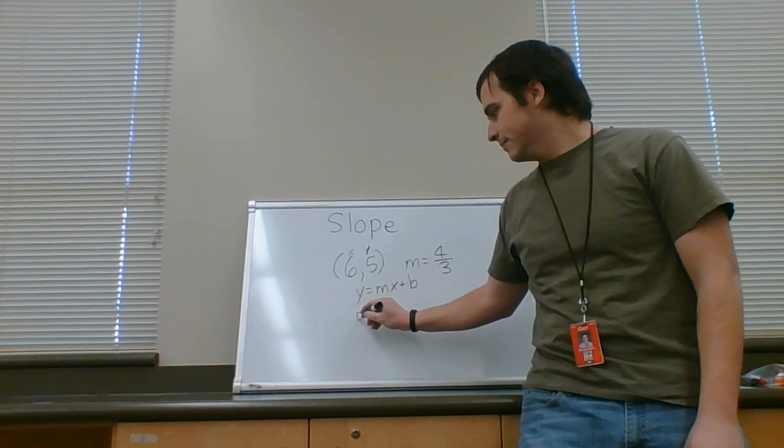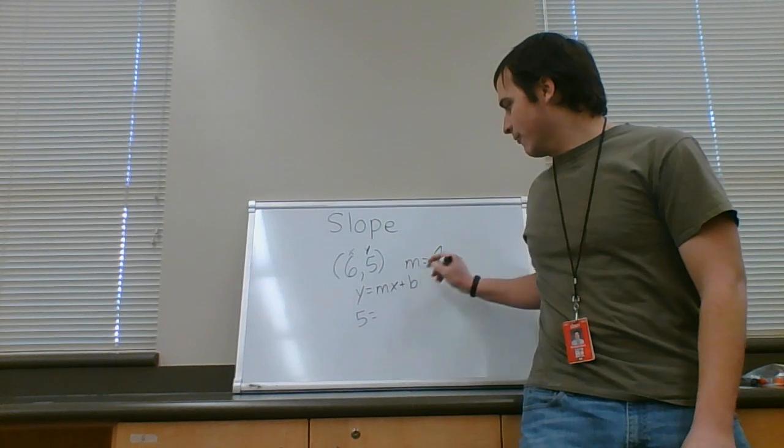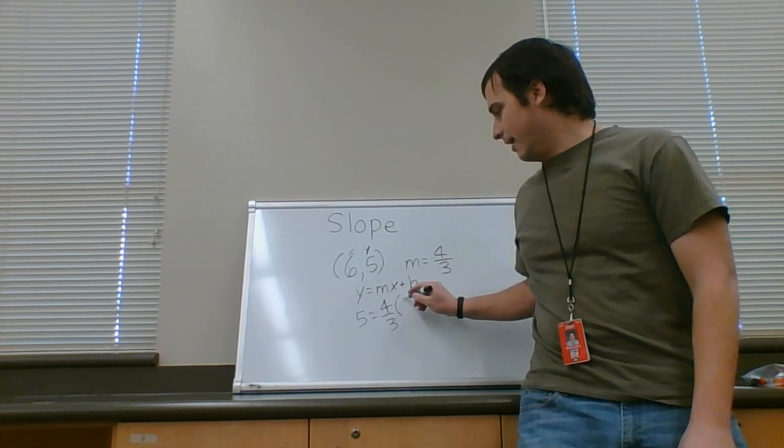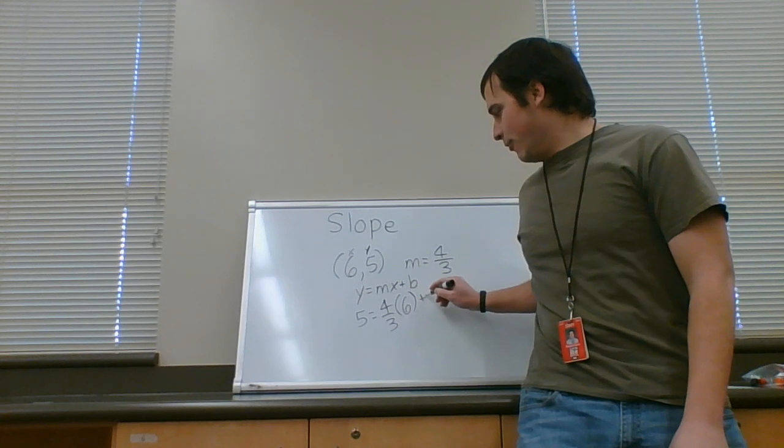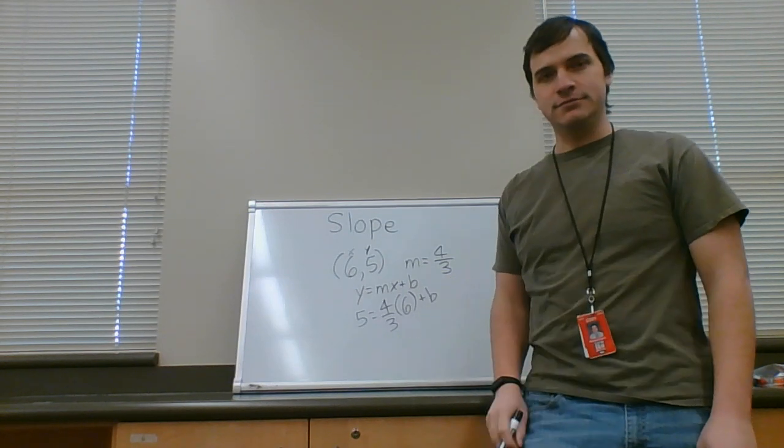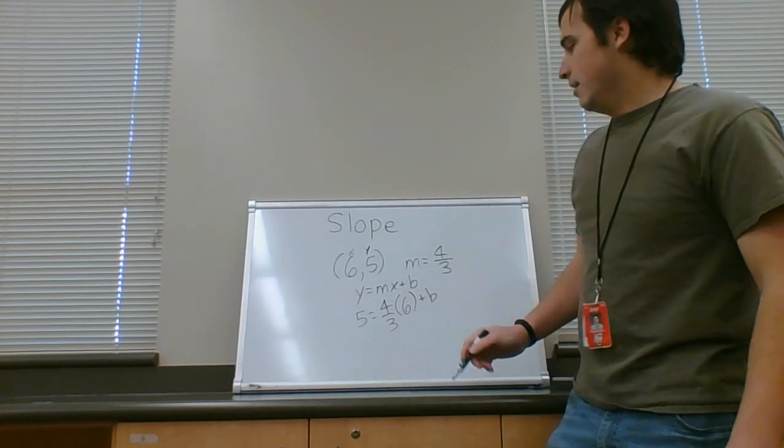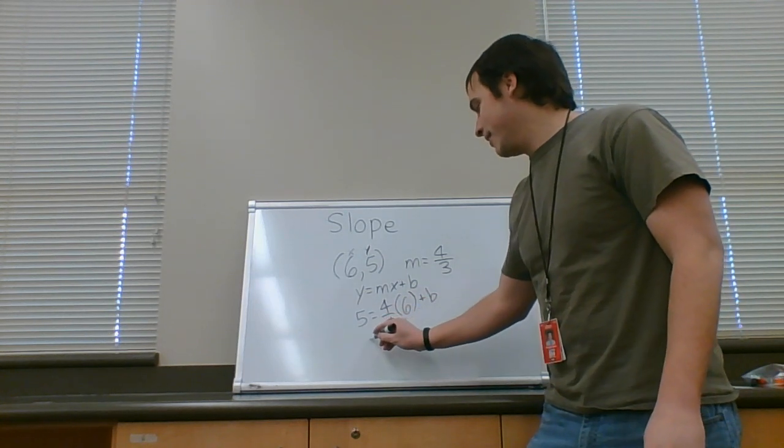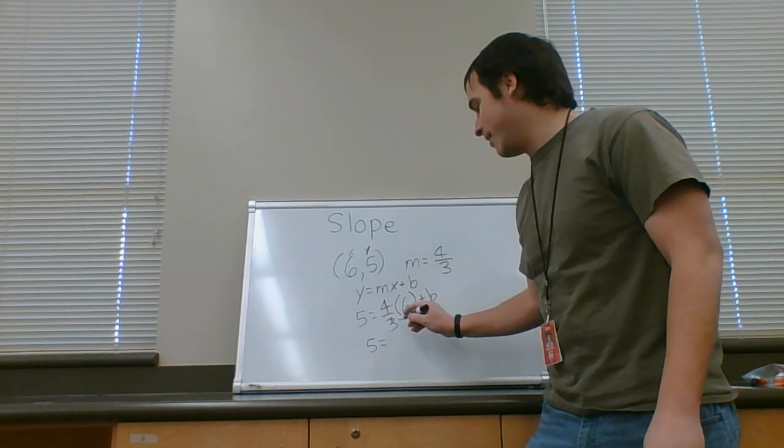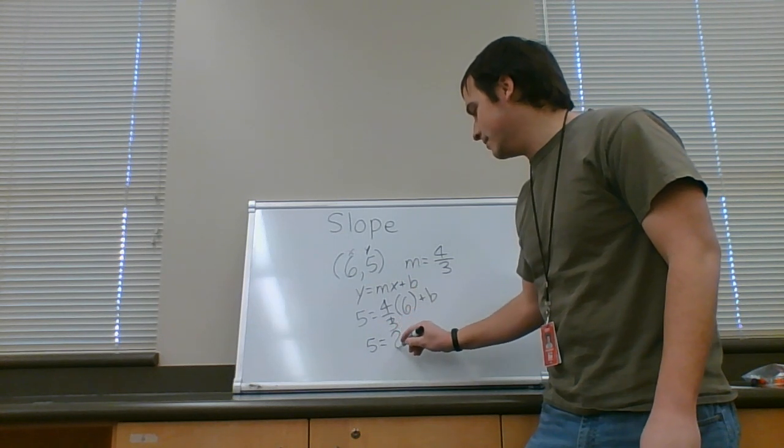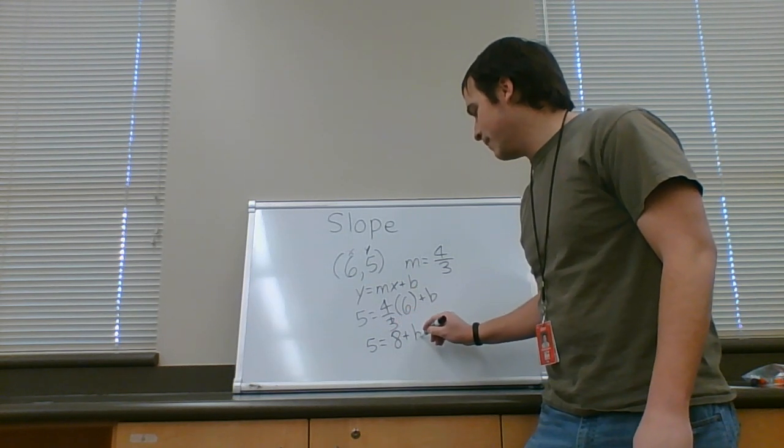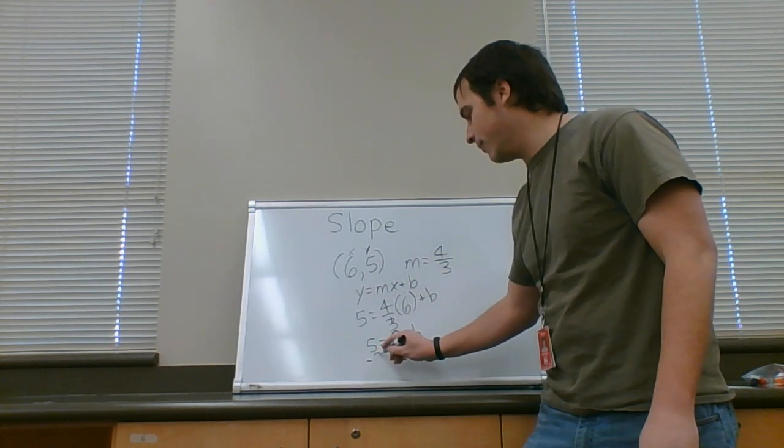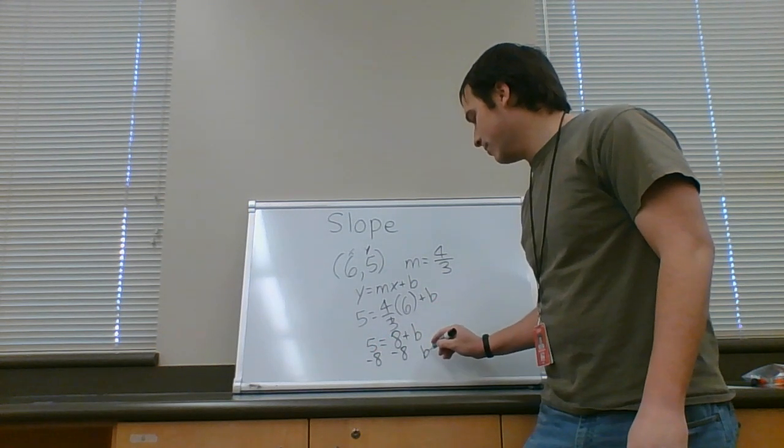y is five, and m is four thirds, x is six, and we don't know b yet, but we'll find out. Sorry. Alright, four thirds times six, I just crossed out three for no apparent reason, but it doesn't matter because four thirds times six is equal to eight, and we still have the plus b. To solve for b, subtract eight, just like you would for any other equation.